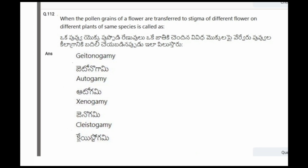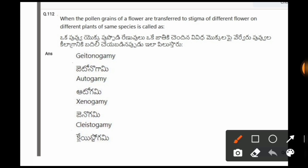Next question: When pollen grains of a flower are transferred to the stigma of a different flower on a different plant of the same species, it is called? The options are geitonogamy, autogamy, xenogamy, cleistogamy. The correct option is xenogamy.